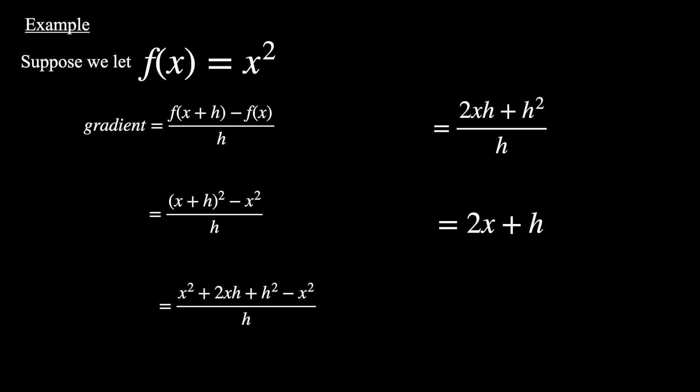So this is the expression for the gradient of that line between the red and the yellow points. And now I'm going to ask the question, can we make h disappear? Because if we could make that plus h on the end disappear, we would have the gradient of the tangent.